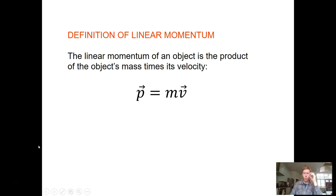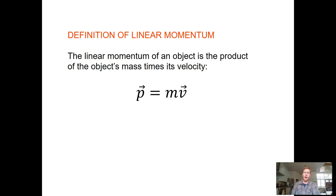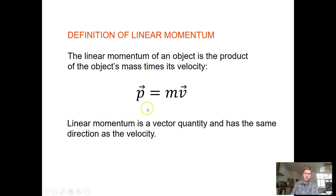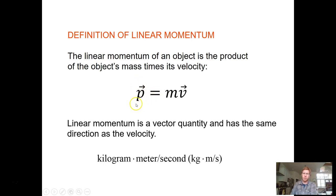Now let's introduce momentum. Momentum depends on two quantities: mass and velocity. Playing football in high school, the momentum somebody had was determined by how fast they were going and their mass — as a smaller player, I needed more velocity to match the momentum of bigger opponents. Momentum is mass times velocity, it's a vector quantity, its direction is the same as velocity, and it has units of kilograms times meters per second. We use the lowercase letter p to represent momentum.